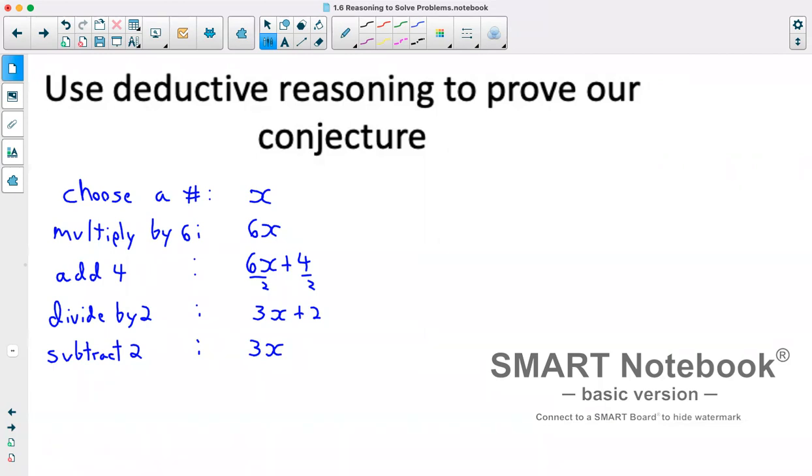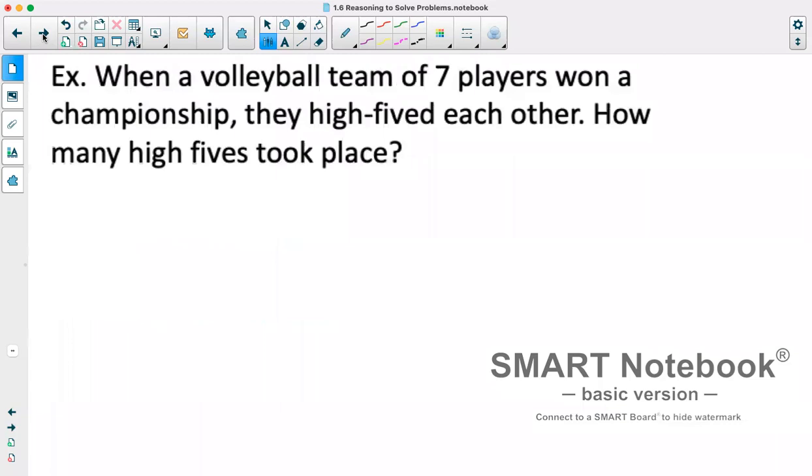In some ways, for some questions, we can prove conjectures utilizing things like this. In other cases, we essentially have to use brute force and patterns to figure things out. For example, when a volleyball team of 7 players won a championship, they high-fived each other. How many high-fives took place if every player high-fived every other player on the team?